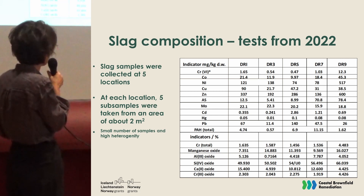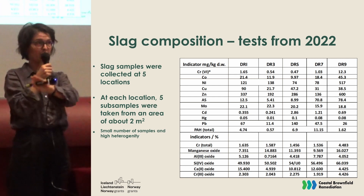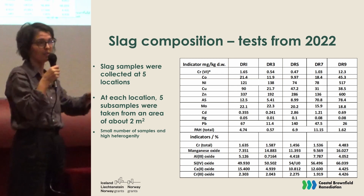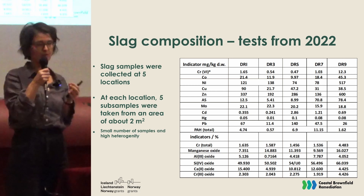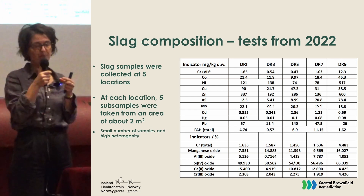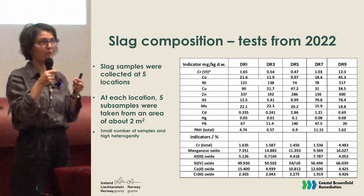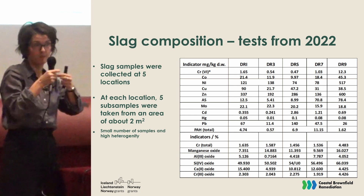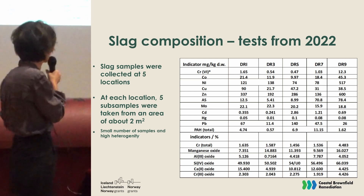There were only five locations with five sub-samples at each location. Based on these results and from the visual inspection we had yesterday, we can see that the area is very heterogeneous — not only visually, but also in terms of material fraction. Different fraction sizes do not behave similarly; for example, slag as a larger fraction behaves differently from smaller fractions or dust.